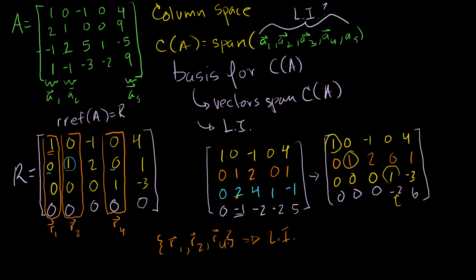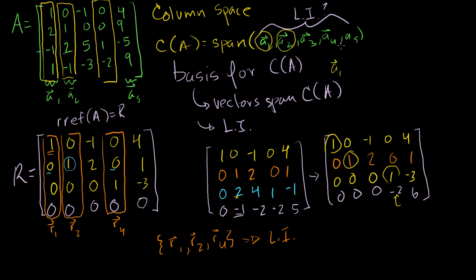It turns out — and I haven't proven it yet — that the corresponding columns in the original matrix A are also linearly independent. So A1, A2, and A4 are also linearly independent. You can get a sense that these row operations don't really change the fundamental structure of the matrix. In the next video I'll give a better explanation, but for now I want you to understand how to find a basis for the column space.